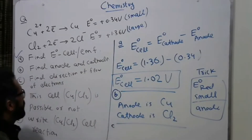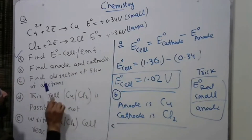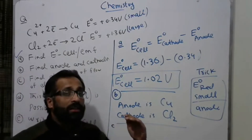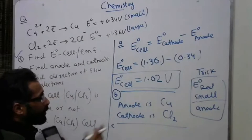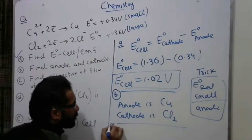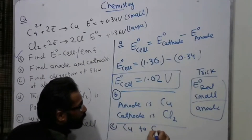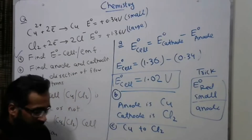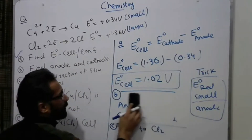Part C: find the direction of flow of electrons. Electrons always flow from anode to cathode. Since the anode is copper and the cathode is chlorine, electrons flow from copper to chlorine.